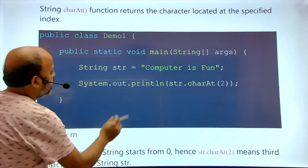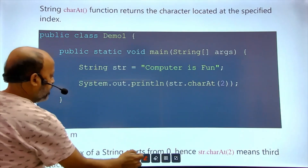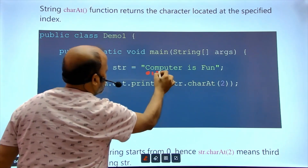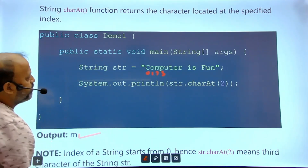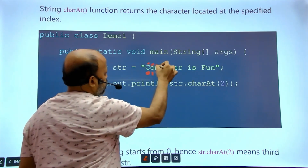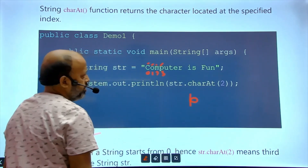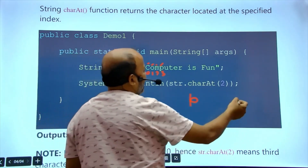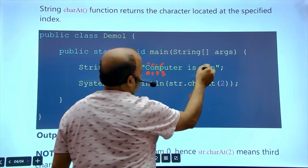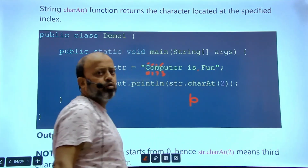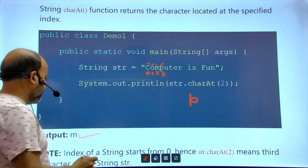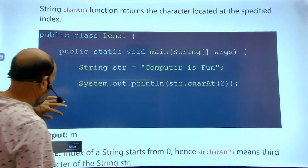At index 2: position 0 is 'c', 1 is 'o', 2 is 'm' — so the output is 'm'. If you call charAt(3) you get 'p'. If the index is outside the range, for example charAt(15) when the string doesn't have that index, you will get an error. So charAt() gives the character at a particular location.